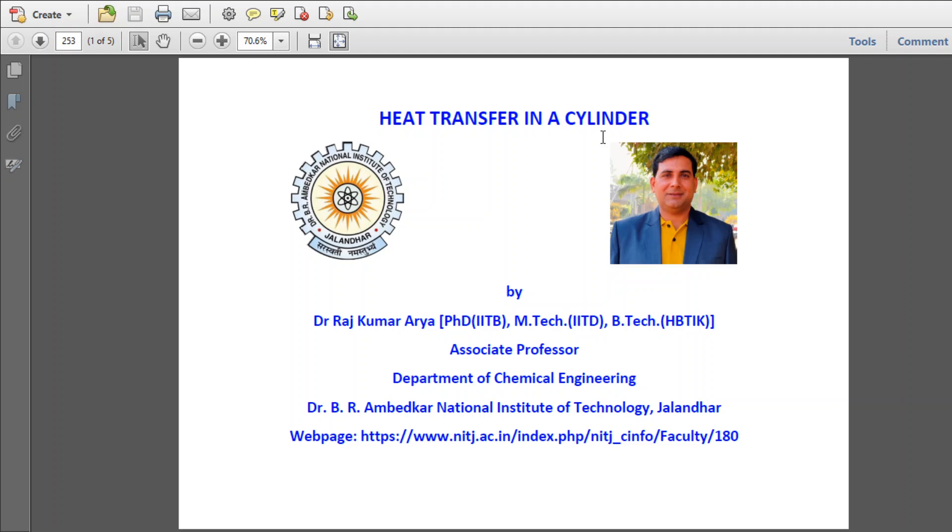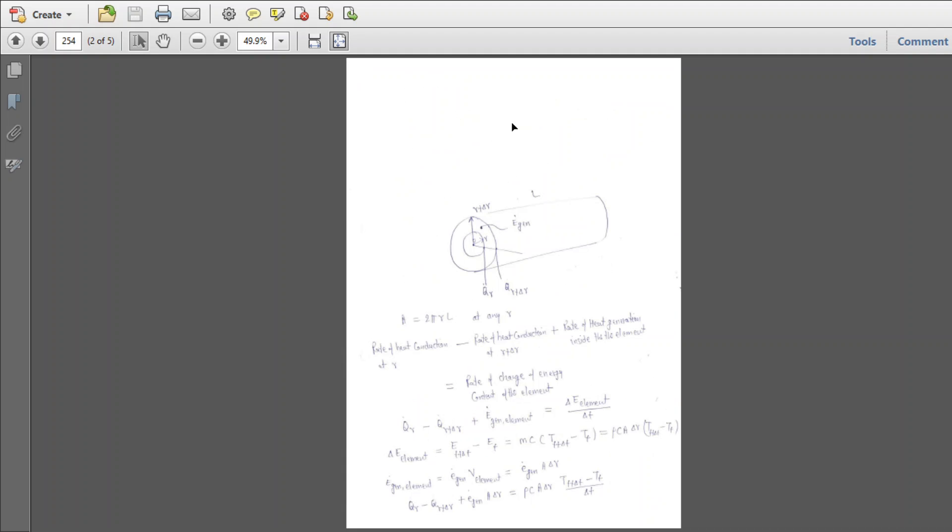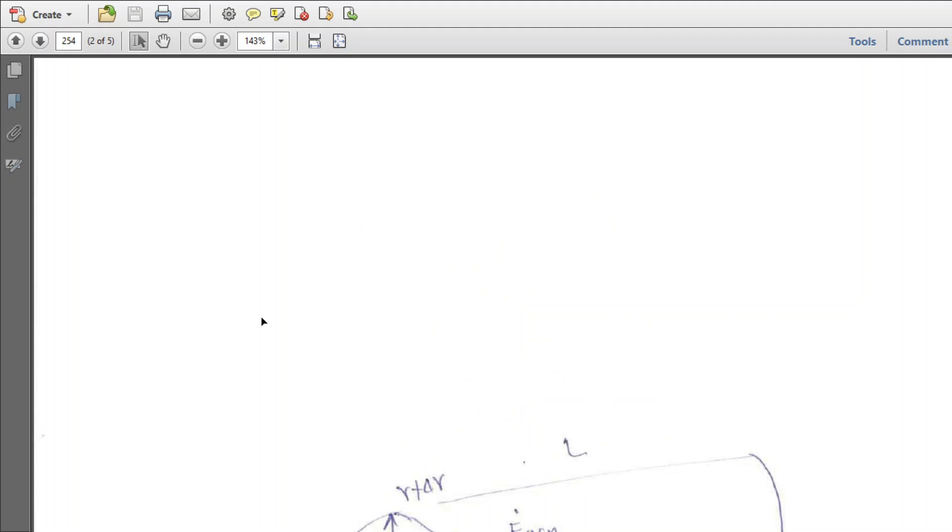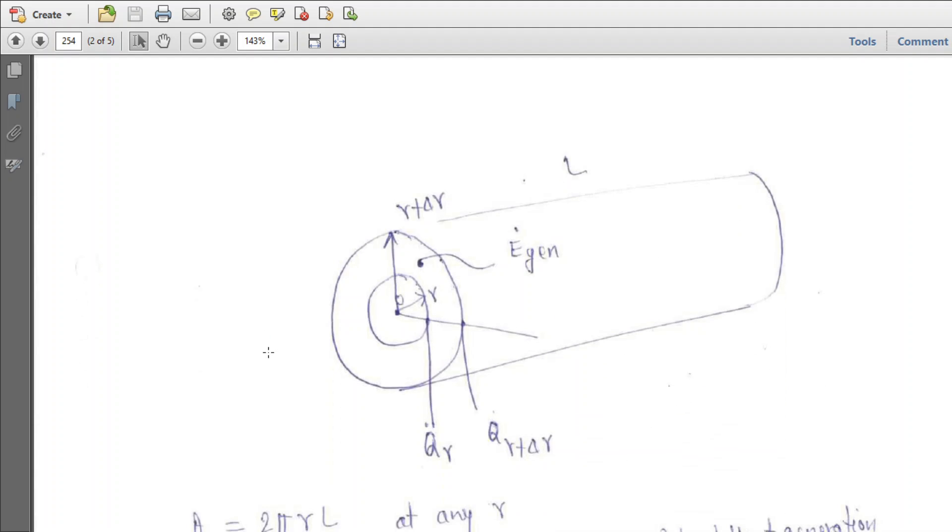Today we will derive the expression for heat transfer in a cylinder. This is a cylinder of radius R, and we want to generate an expression for temperature variation within this cylinder where energy is also being generated.